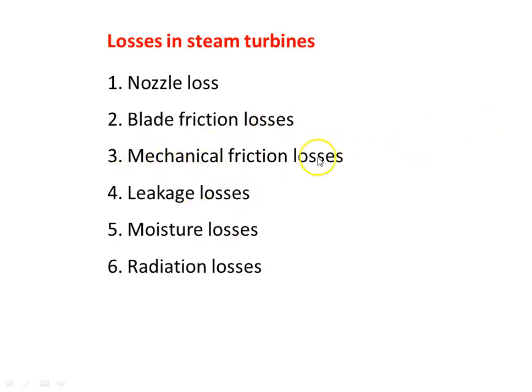The third type is mechanical friction losses, which occur in the end bearings. There is a shaft in the steam turbine, and the rotor along with all the rotor blades is attached to the shaft. The shaft is supported in the casing at the ends. At each end, the casing and the shaft are connected by means of bearings. A bearing is a component that permits relative motion between two mechanical surfaces, and this results in mechanical frictional losses.